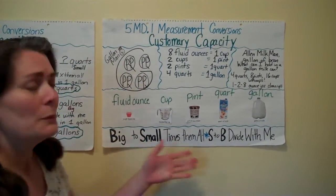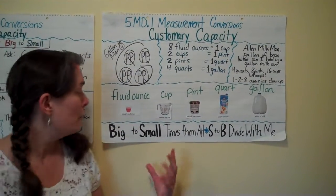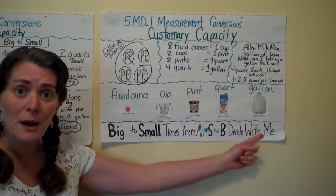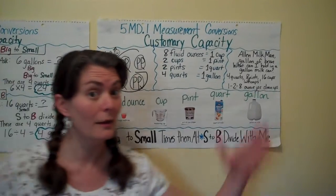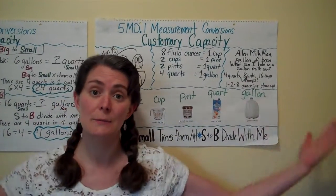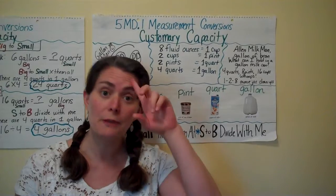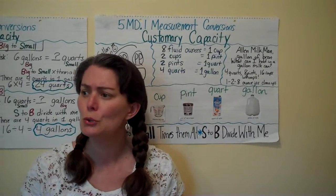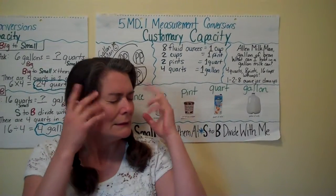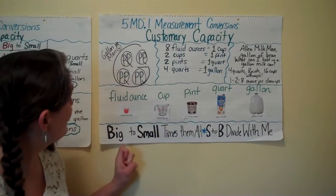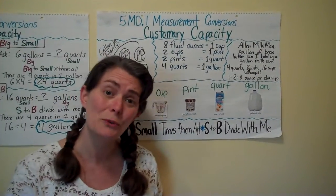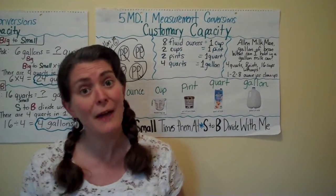When we do our measurement conversions, we're going to use this mnemonic: 'Big to small, times them all. S to B, divide with me.' We've been using that for the last two customary units — length and weight — and you're going to use that same idea to know whether you need to multiply or divide.